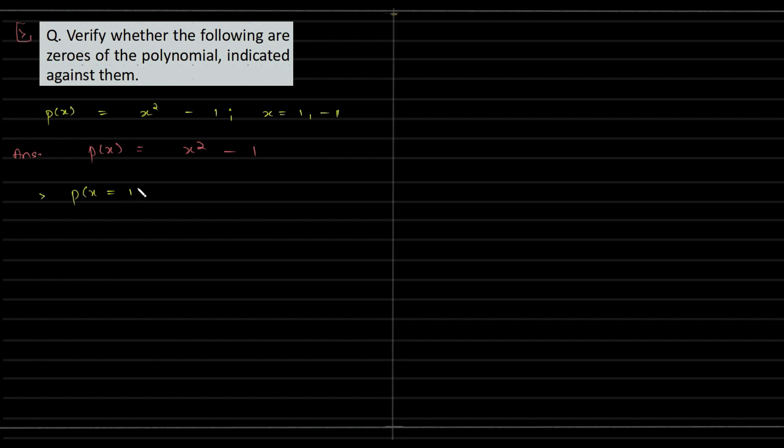So 1² minus 1 which is nothing but zero. So this is zero of the polynomial because 1² minus 1 is zero itself. And p(x) equal to minus 1: we have (-1)² minus 1, so this is +1 minus 1 which is zero again.